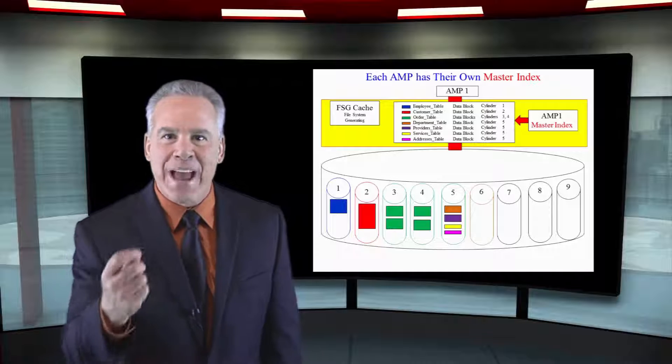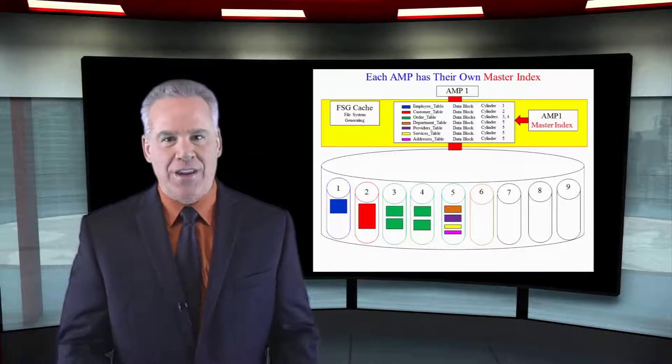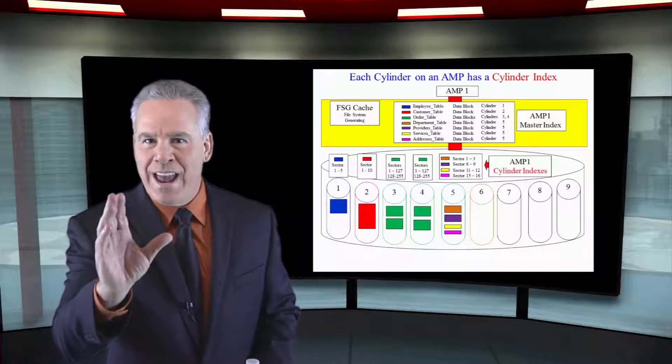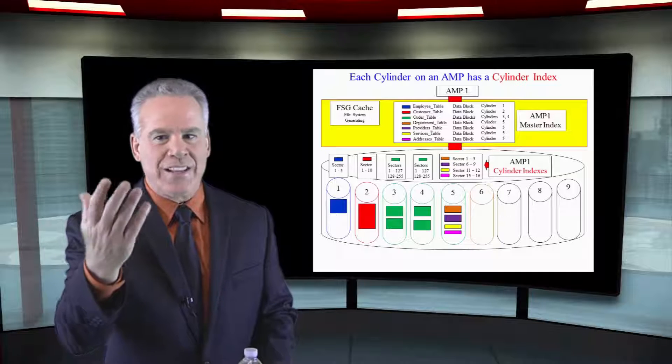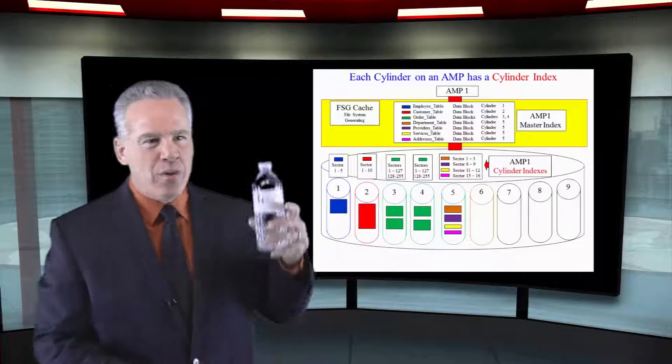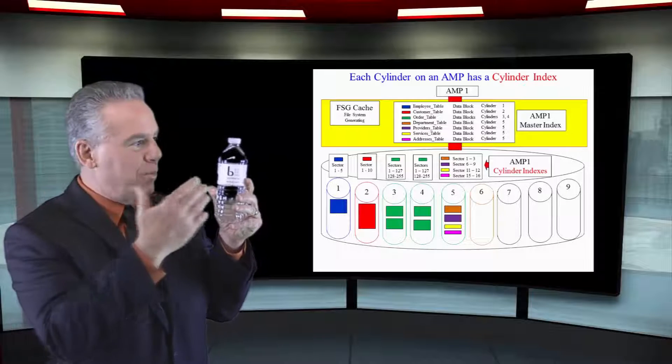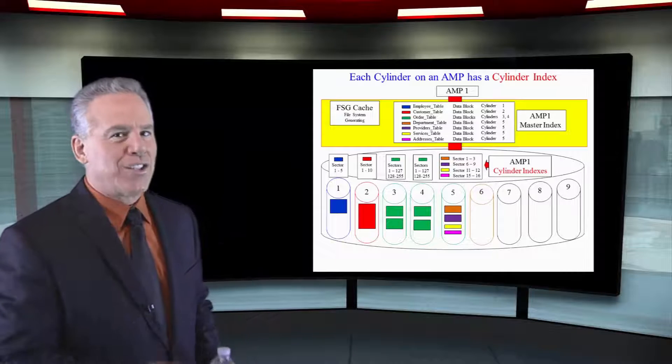That's how the master index is used by the amp to find things in under a second. This is the piece now that we've been missing that's going to really make even more sense than before. We know we've got thousands of cylinders on each disc and an amp's going to be able to track those with its master index.